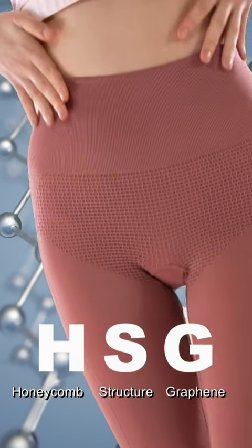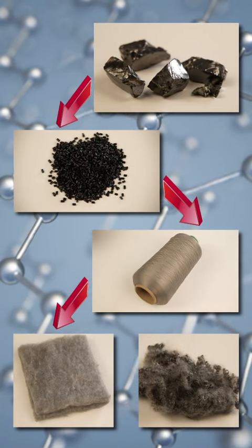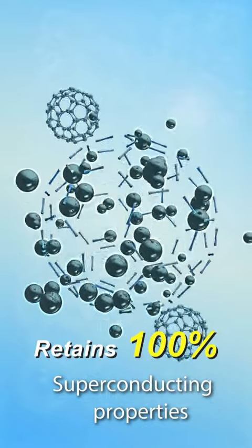The exclusive PP Honeycomb Structure Graphene, created by stripping raw graphene to micron size and weaving it into yarn, retains 100 percent of its superconducting properties.